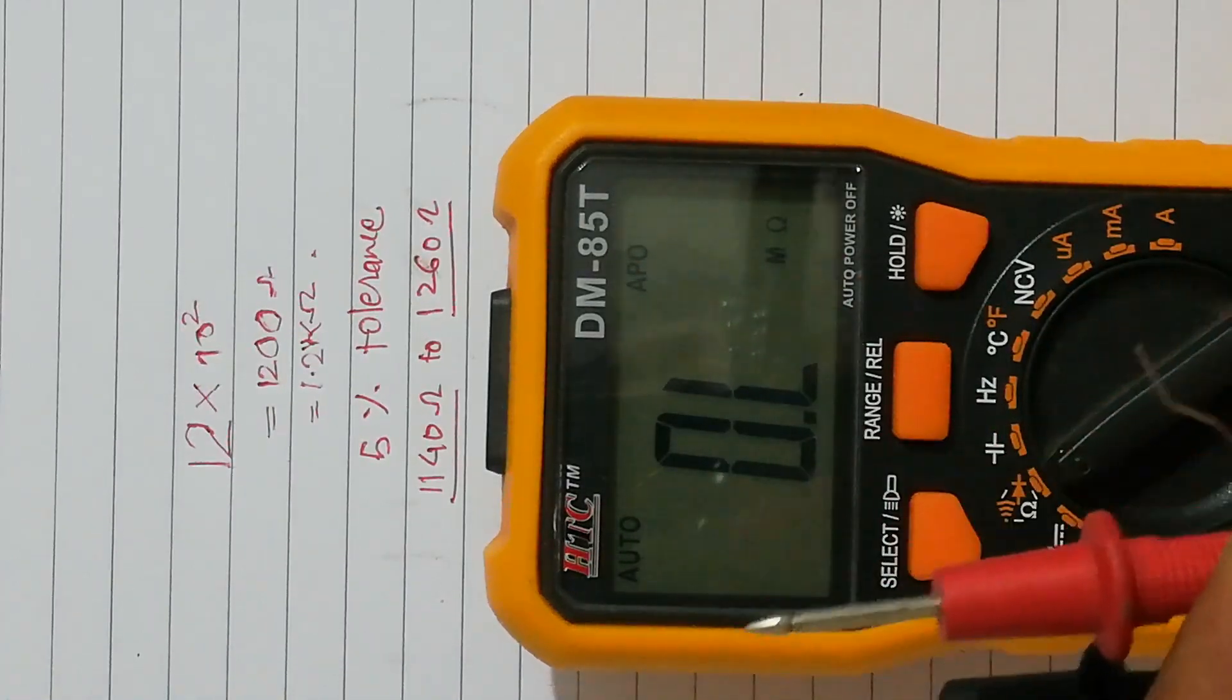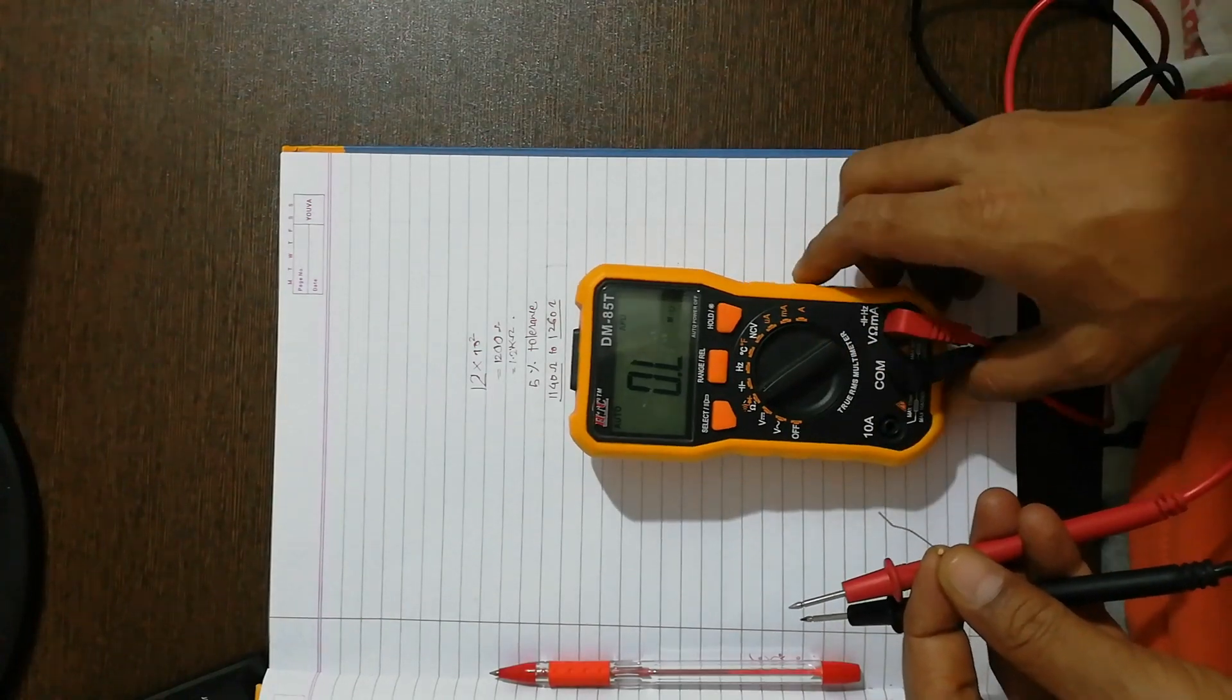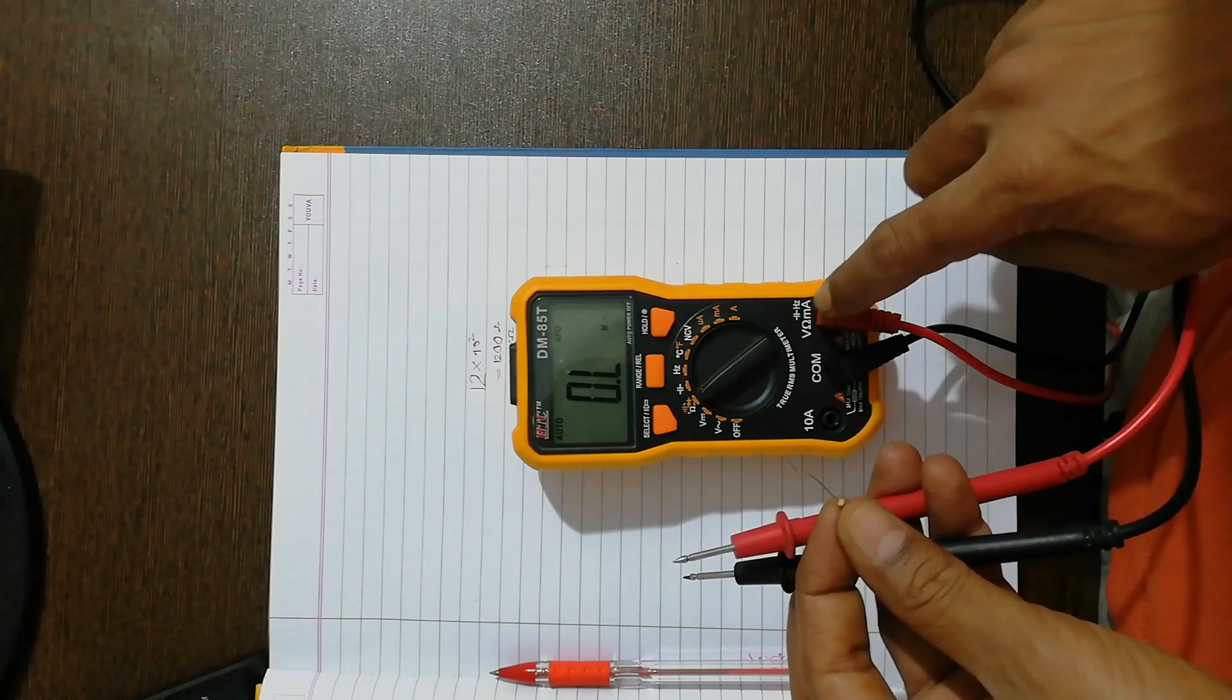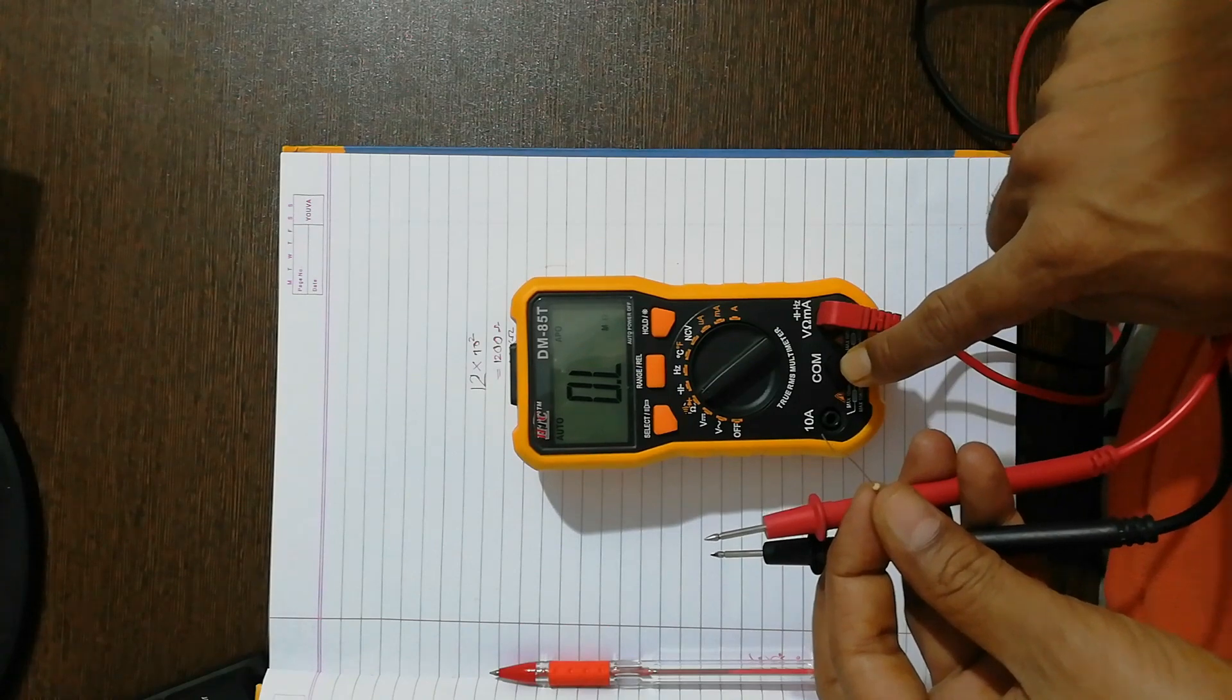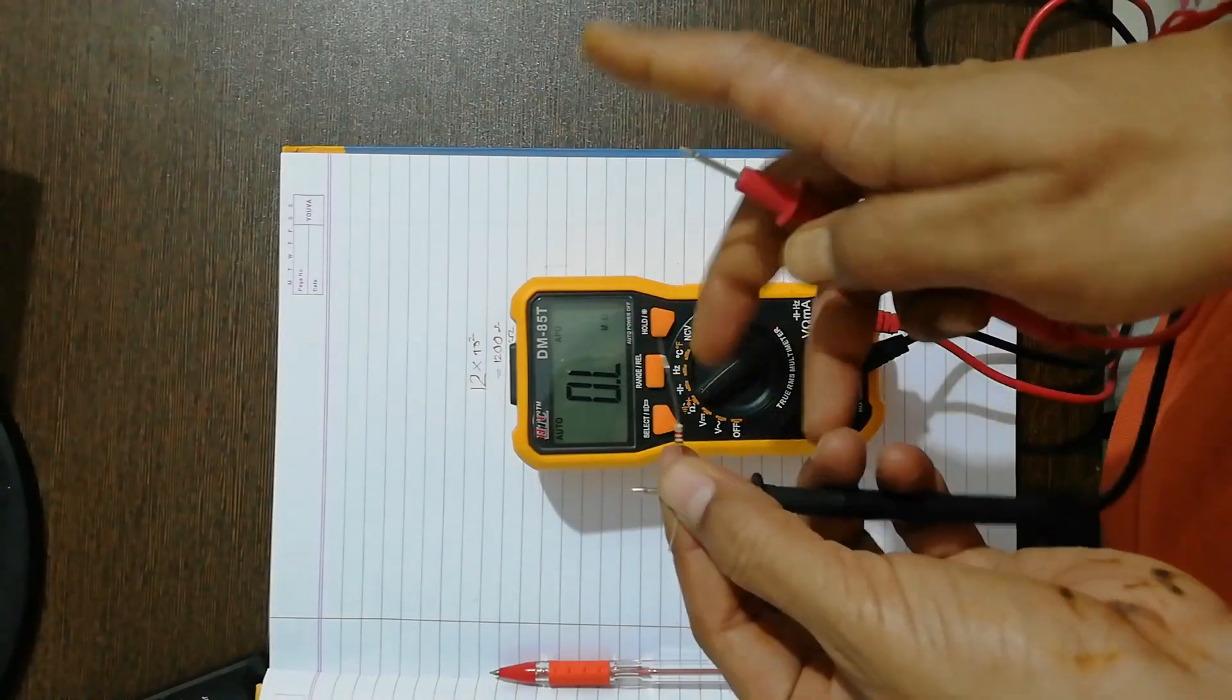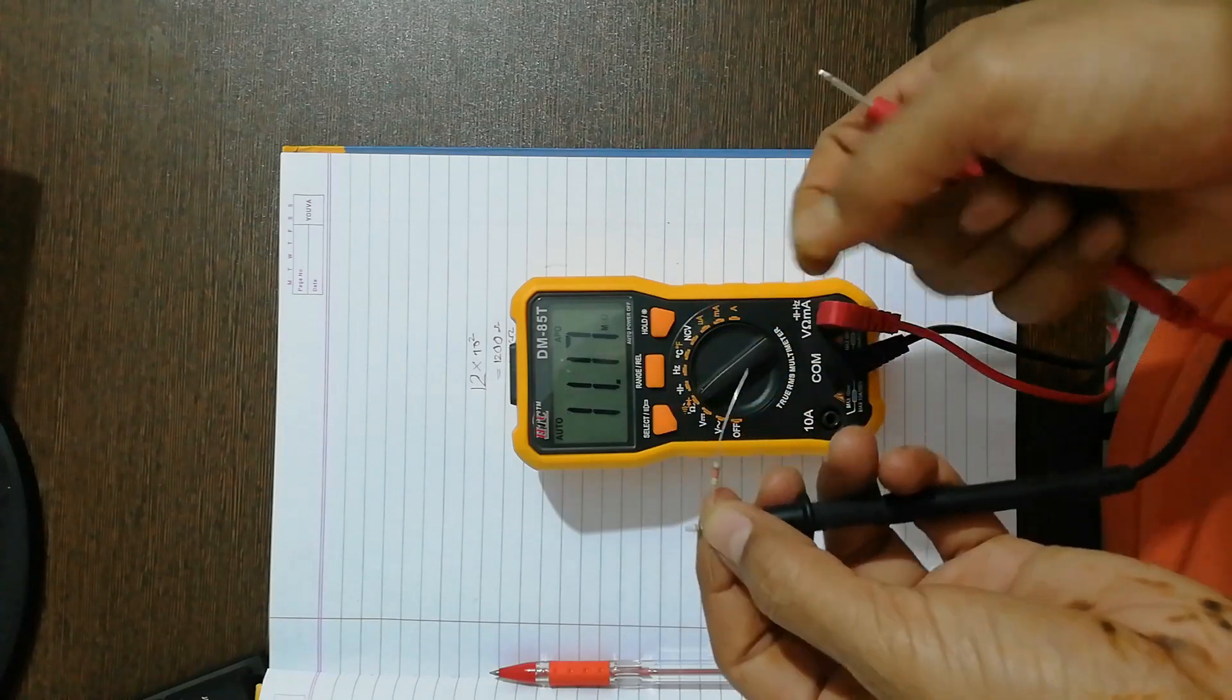And I have these two probes which are connected to the multimeter right here. You can see that the red probe is connected to the voltage, ohms, and milliampere setting, and the black probe is a common one. So always have the setting and the knob is set to ohms.